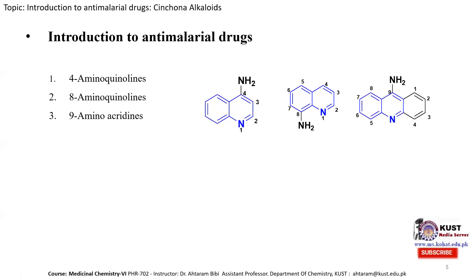The third class is 9-aminoacridine. Its structure consists of a quinoline unit fused with another benzene ring, with an amine group at the 9-position. When we substitute various carbon atoms or the nitrogen with alkyl, aryl, or other substituents, we obtain derivatives with excellent anti-malarial activity.